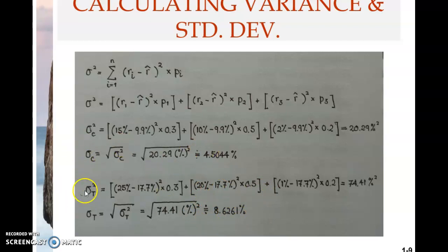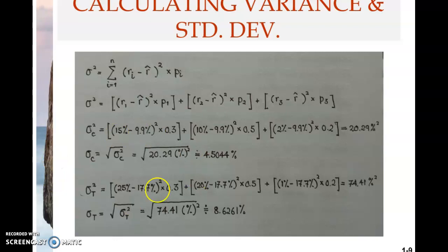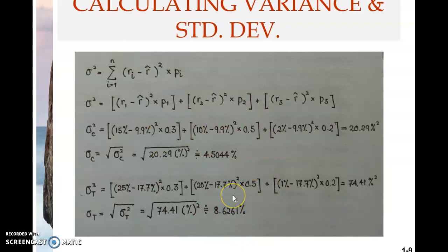Now, which stock has higher standard deviation? Stock T. It means stock T has higher risk compared to stock C. That's the conclusion. Remember when we looked at the expected return, stock T had higher expected return compared to stock C, but at the same time stock T also has higher risk because it has higher standard deviation compared to stock C.